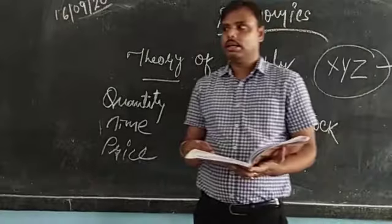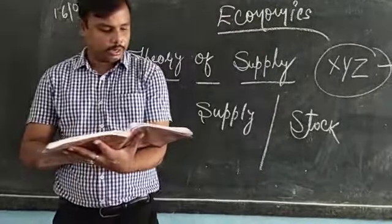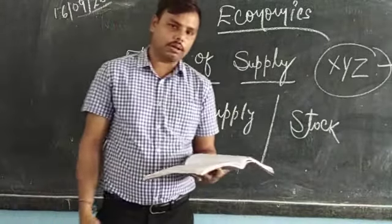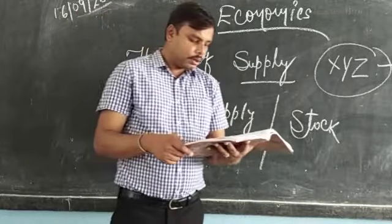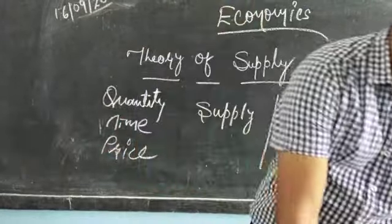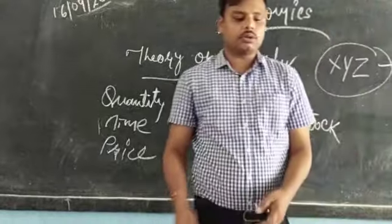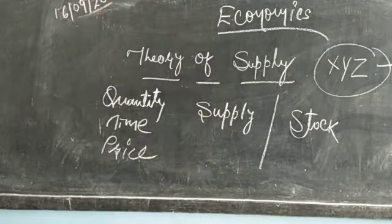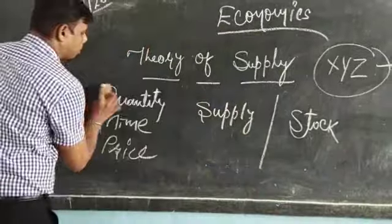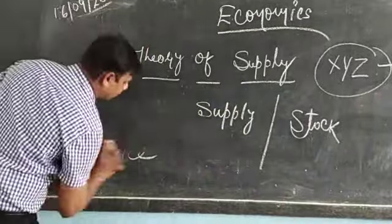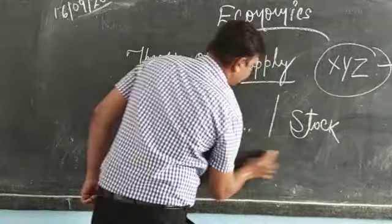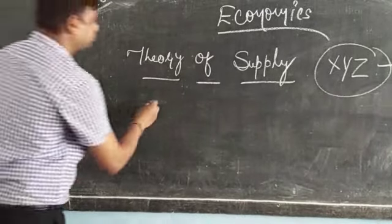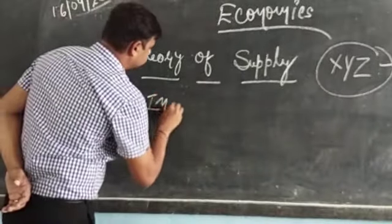Many definitions are quoted here; you can choose any one. Next is the difference between supply and stock, which I already explained. Next I will come to the types of supply — that is individual supply and market supply. What is an individual supply? It is similar in concept to individual demand.